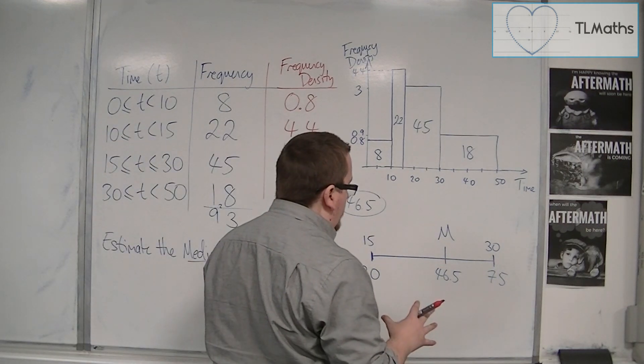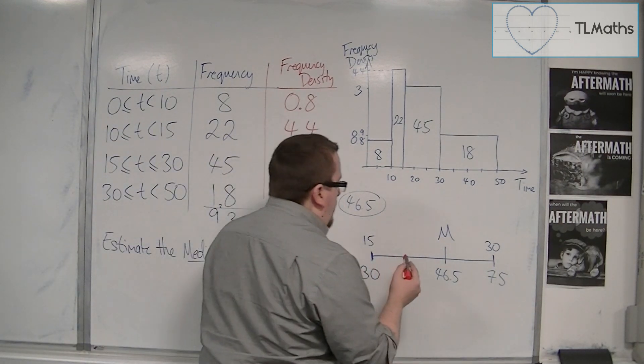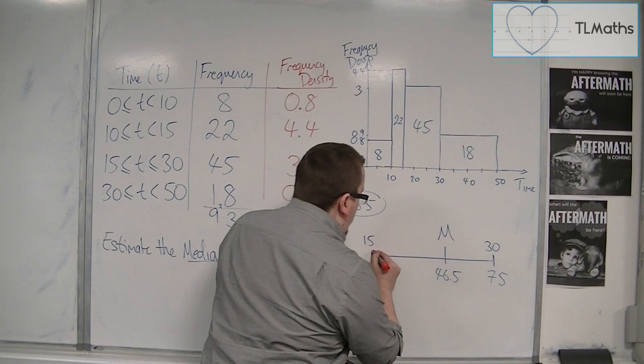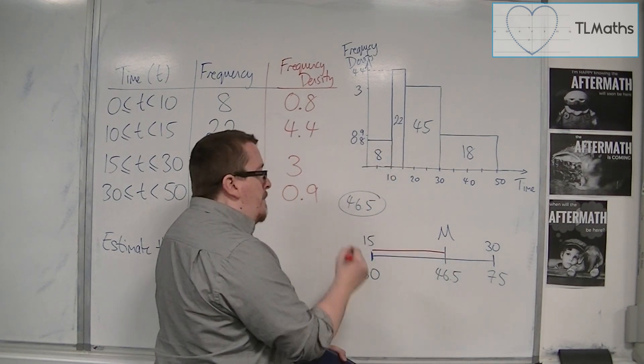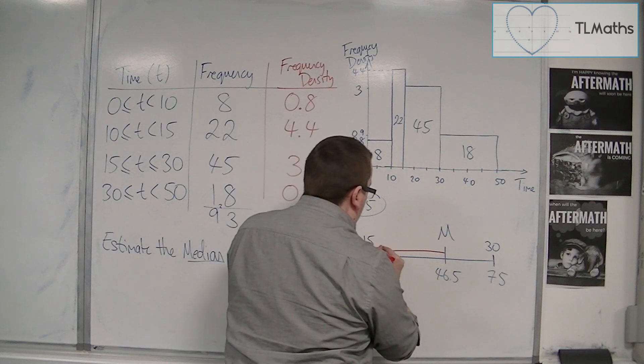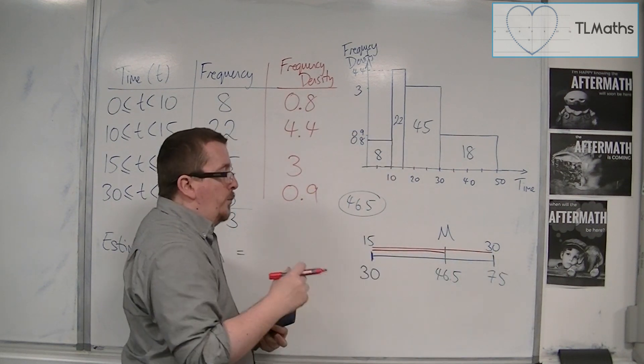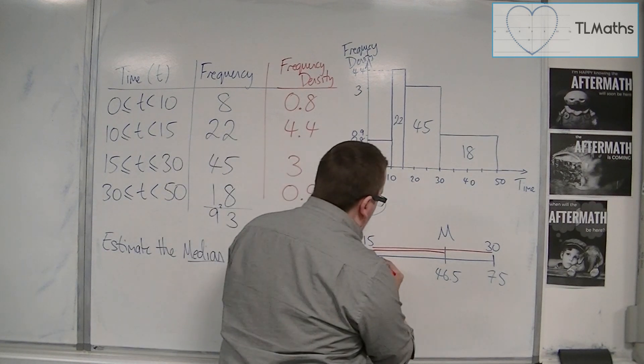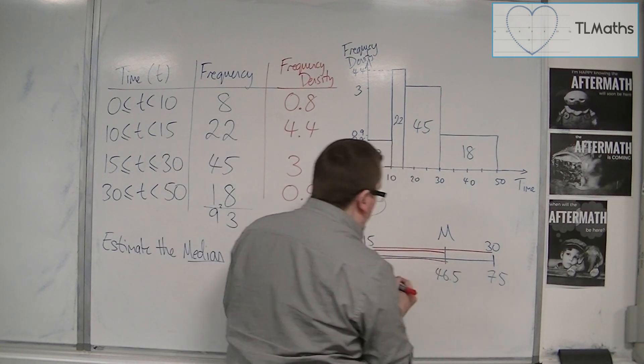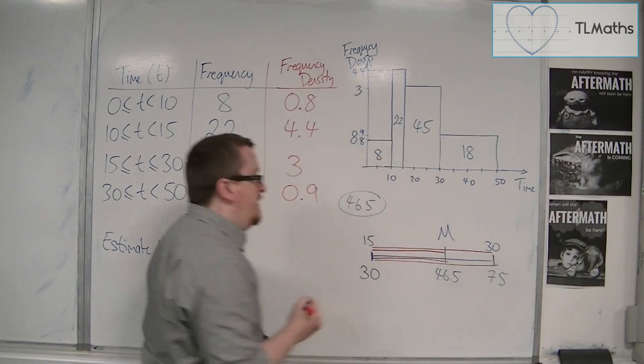And effectively what we're going to do is we're going to use common ratios. Or similar ratios here. So that if we think about the ratio between M and 15, and 30 and 15, this will be the same as the ratio between 30 and 46.5, and 30 and 75.